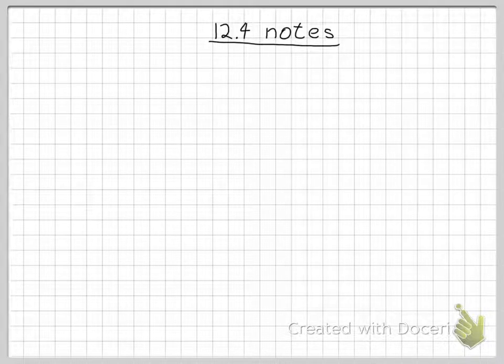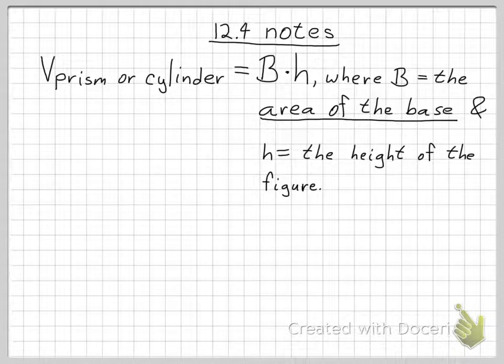And today, specifically, we're going to be doing the volume of prisms and cylinders. The formula for the volume of a prism or cylinder is equal to capital B times h, where capital B is the area of the base, and h equals the height of the figure.